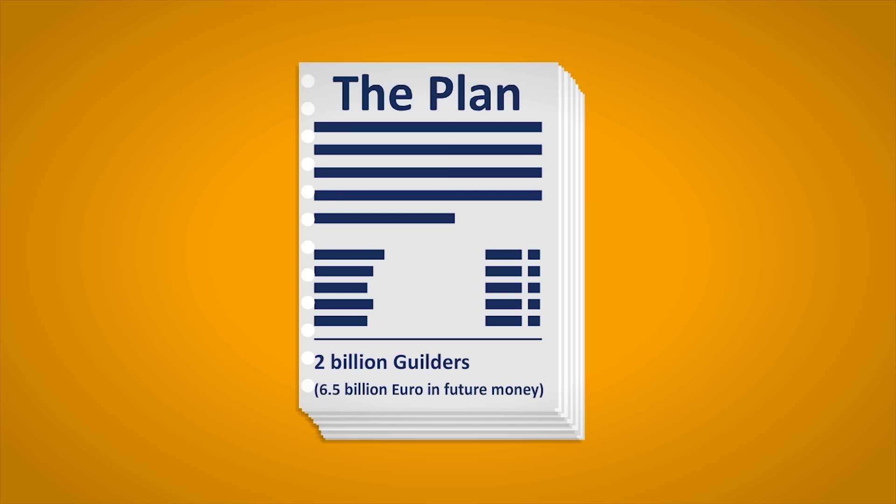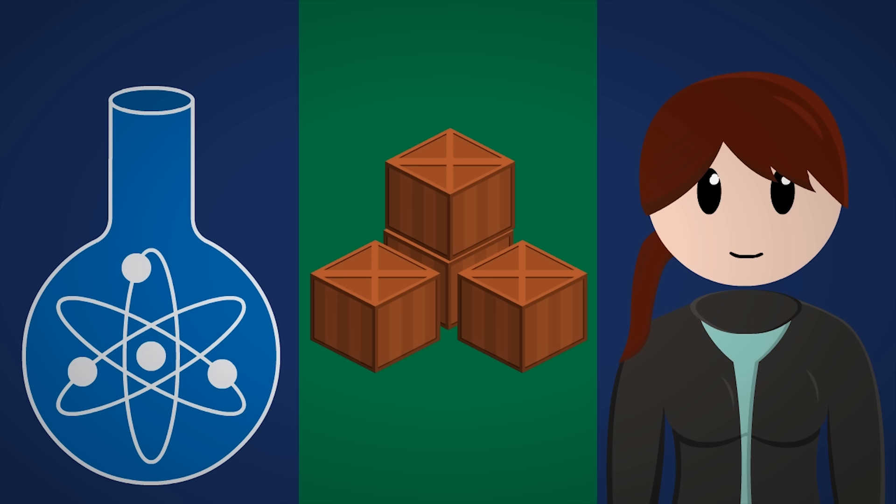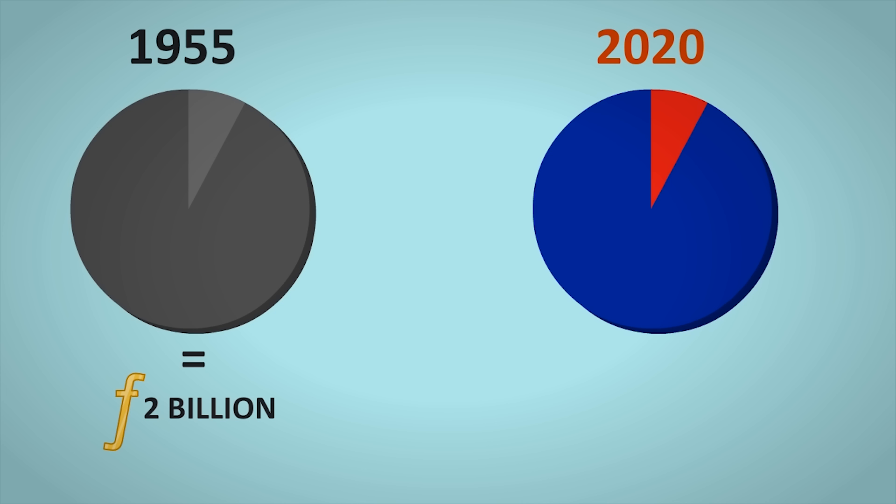That doesn't sound like a lot today. After all, humanity possesses far better technology, far more resources, and far more abundant manpower. But 2 billion guilders in 1955 was a tremendous amount of resources to devote on a single project. In fact, this was about 13% of the entire Dutch economy at the time.